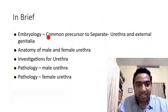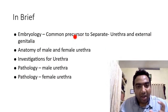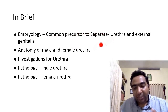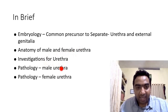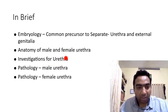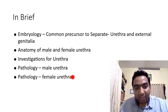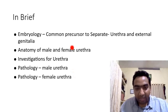We will first see how the male and female urethral system developed. We will discuss the embryology of the urethra — how the common precursor became separate urethra and external genitalia — then the anatomy of the male and female urethra, investigations of the urethra, pathology of the male urethra, and pathology of the female urethra separately.